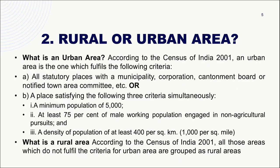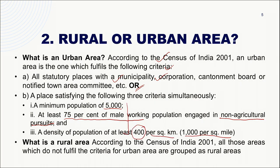The second important question is how to identify a rural or urban area. According to the census document, an urban area is one declared as such by municipality, corporation, cantonment board, or notified town area, or a place satisfying all three criteria simultaneously: a minimum population of 5,000; at least 75% of the male working population engaged in non-agricultural occupation; and a density of at least 400 persons per square kilometer (roughly 1,000 per square mile).